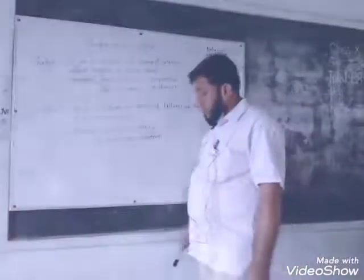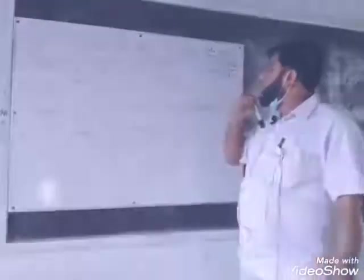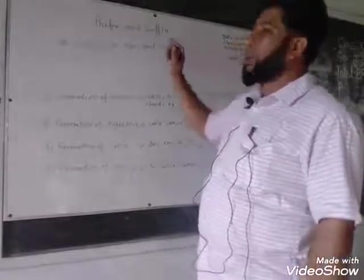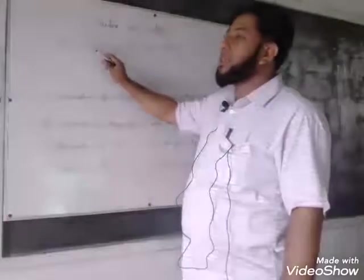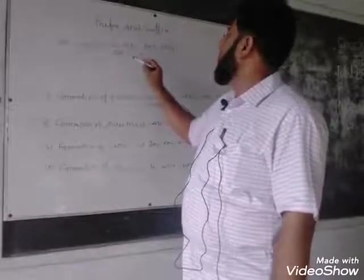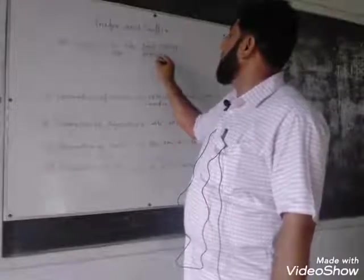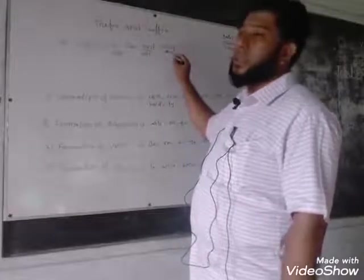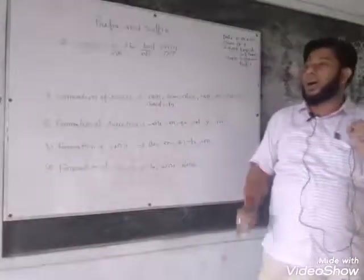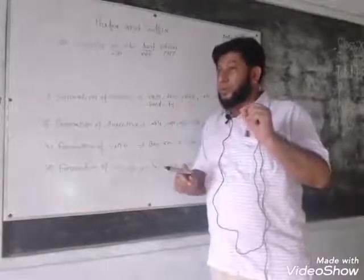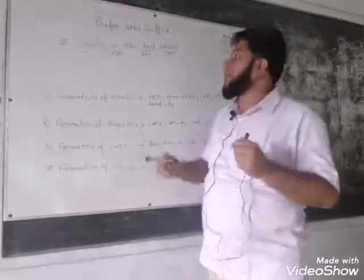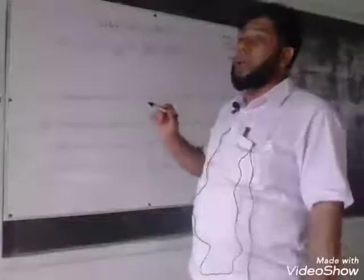Now we can make a sentence: 'Honesty is the best policy.' Here, the word 'honesty' is a noun, 'is' is a verb, 'best' is an adjective, and 'policy' is a noun. So we use some technique — how to write the correct form of parts of speech. If we can write the parts of speech correctly, we can be able to answer correctly.